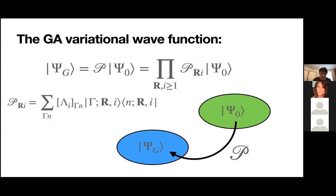The GA method is a variational method, so we need to define the variational space. We call ψ_G the most general GA wave function, represented in the form where ψ₀ is some single-particle wave function and P is some operator with a local form — a product over the correlated degrees of freedom. Physically, we want to modify the weights of the different electronic configurations of ψ₀ especially for the correlated modes when we have some interaction.